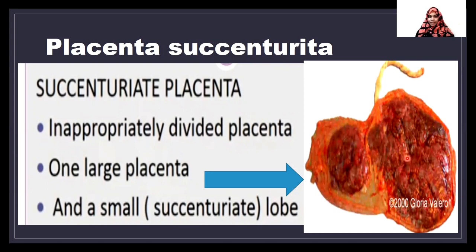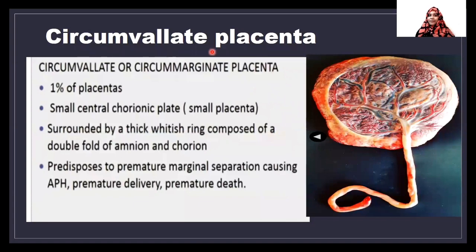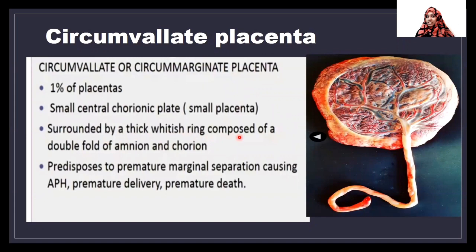Next is circumvallate placenta. Circumvallate placenta comprises about one percent of placentas. Its specialty is that it has a small central chorionic plate, and it is surrounded by a thick whitish ring composed of a double fold of amnion and chorion, as you can see here.